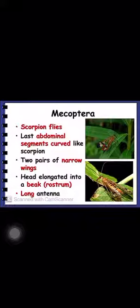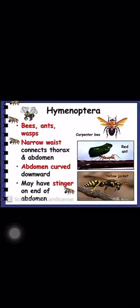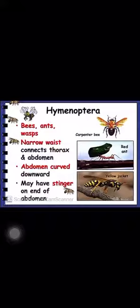Then there is order Mecoptera, which includes scorpion flies. The abdominal segments are curved like the scorpion, therefore it is called Mecoptera. In Hymenoptera we have bees, ants, and wasps. A typical feature of Hymenoptera is a narrow waist — meaning the thorax and abdomen are constricted or very narrow — and they also have stings.